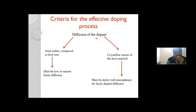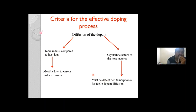What are the criteria for effective doping? The ionic radius — whether cation or anion — must be comparable to the host ions so that faster diffusion can be facilitated. The host material's crystalline structure must be largely amorphous so that there are many defects. If you dope into a crystalline matrix, more heat energy is required to break the bonds, but in an amorphous host matrix there are too many dangling bonds.